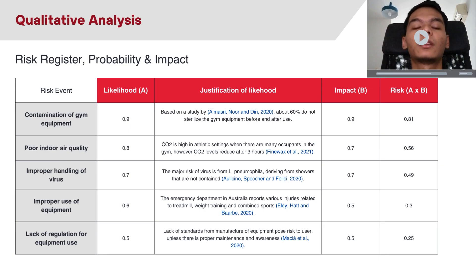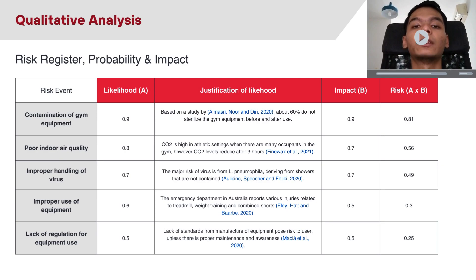Assalamualaikum warahmatullahi wabarakatuh, my name is Pakro Ayman bin Khori. I will explain about the qualitative analysis for our risk management related to the risk register probability and impact. These are the top five risk events. The first risk event is contamination of gym equipment. The risk value is very high at 0.81 on a scale of 0 to 1. Based on studies, about 60% of users do not sterilize gym equipment before and after use.